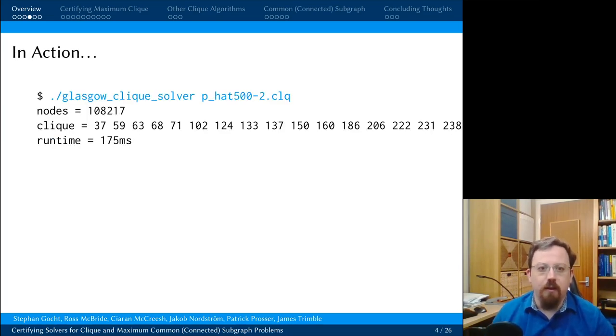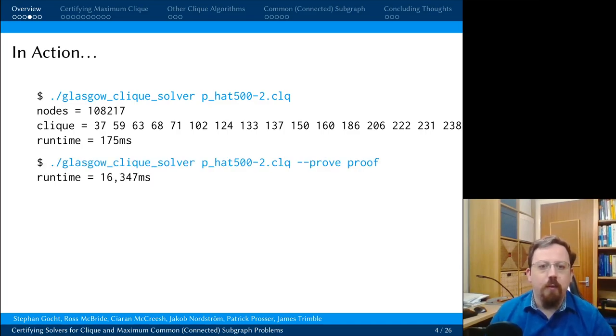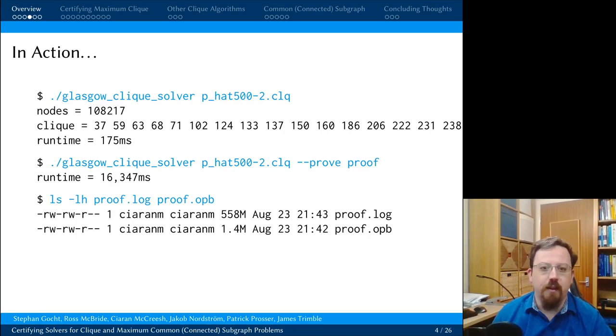Let's take a quick look at this in practice. We run our favourite clique solver on our favourite benchmark instance. It takes 100,000 search nodes in 175ms to find and prove optimality. We can run the solver again and tell it to produce a proof log, which it does. It takes longer because it is producing a 500MB proof log as part of its output.